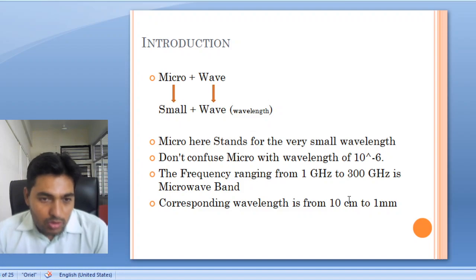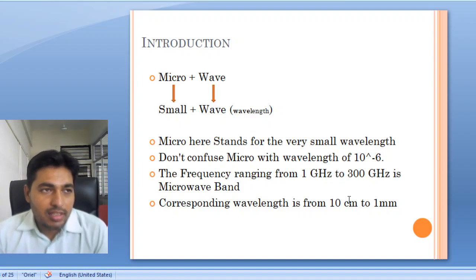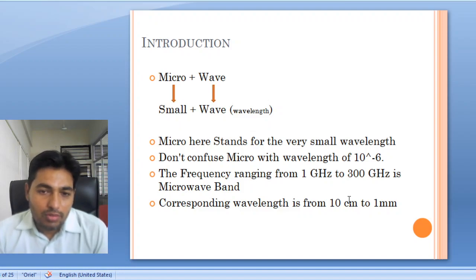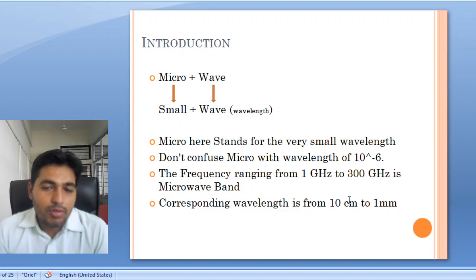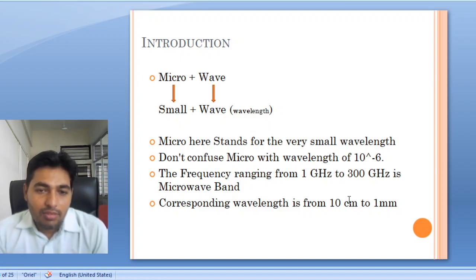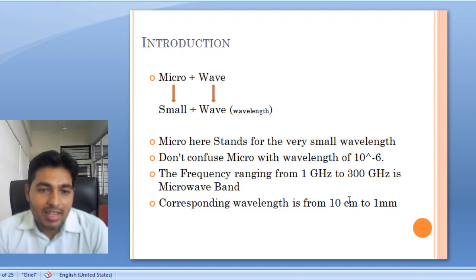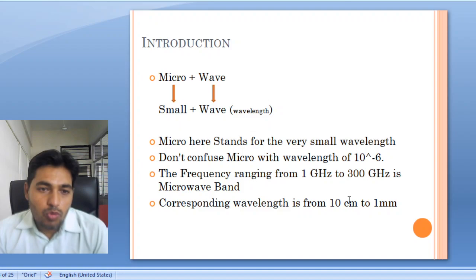Don't confuse with the word micro — micro does not stand here for 10 raised to minus 6. So the wavelength is not 10 raised to minus 6. The range of microwave is 10 cm to 1 mm. So microwave stands for a very small wave.